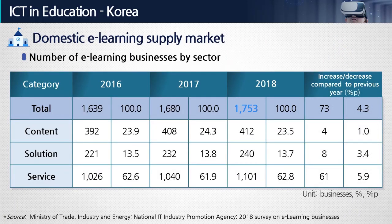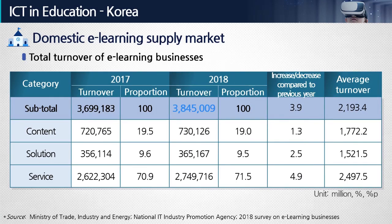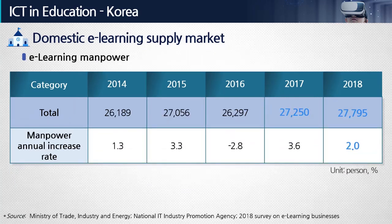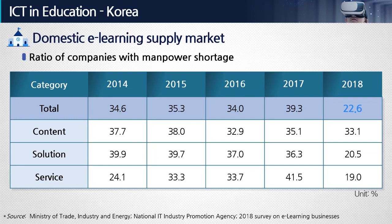Now let's look at the e-learning market in Korea. The number of e-learning businesses has increased continuously, and e-learning services take the most part of the industry. The e-learning market turnover in 2018 was approximately $3.8 billion. Investment in e-learning business is brisk — in 2018, on average 50% of e-learning businesses answered that they received investment. In terms of manpower, except for 2016, it has been increasing continuously. However, many companies cite difficulties in manpower shortage, and still 22.6% of e-learning businesses have difficulties finding proper manpower.